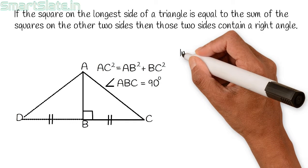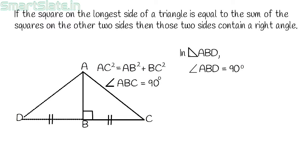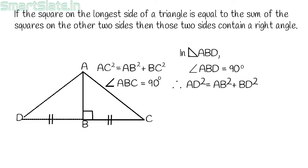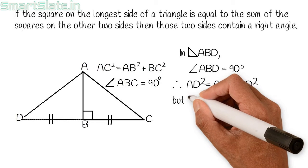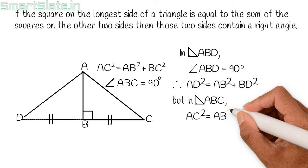In triangle ABD, angle ABD is 90 degrees. Hence AD square equal to AB square plus BD square according to Pythagoras theorem. But in triangle ABC, AC square equal to AB square plus BC square.